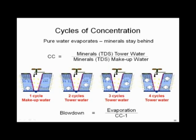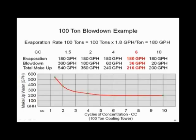I evaporate that 1,000 gallons again — my two rocks stay behind. Bring in another 1,000 gallons with another rock: three cycles of concentration, three rocks. Evaporate again — three rocks remain. Bring in another 1,000 gallons and now you've got four cycles of concentration, four rocks. Concentration is that simple. As you can see, if you don't have some makeup water management, you're going to wind up with a tower full of rocks. We've got to learn to deal with cycles of concentration.